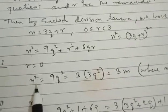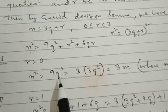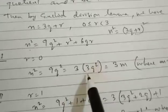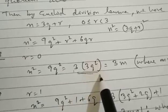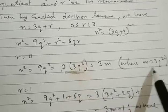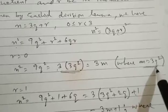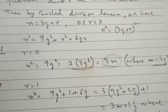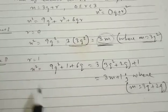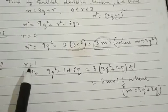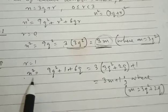When r equals 0, we have n squared equal to 9q squared. Taking 3 common, we get 3 into bracket 3q squared. Now we assume m equals 3q squared, so this can be expressed as 3m. So for the first case when r is equal to 0 we have got the format 3m.